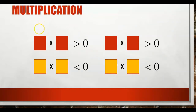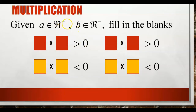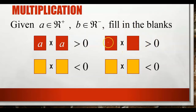Now let's consider the operation of multiplication. We have four relations. Here, A represents a positive real number and B represents a negative real number. To get a multiplication result greater than 0, we put A multiplied by A — positive times positive gives a positive number. For the second statement, B multiplied by B — negative times negative also gives a positive number.